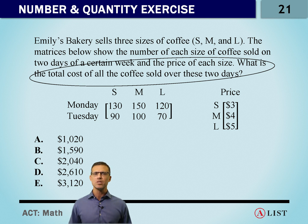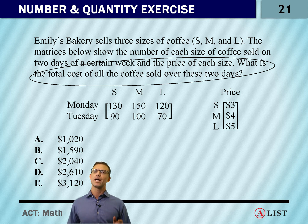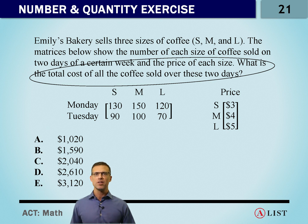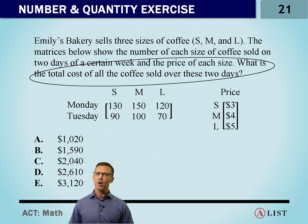Now matrices can seem scary, but in reality they're just ways to group numbers. We need to be able to make sure that we're combining the pieces together. Let's take a look at Monday first. On Monday we sell 130 smalls, 150 mediums, and 120 larges. Well we also know the price of the small, the medium, and the large.